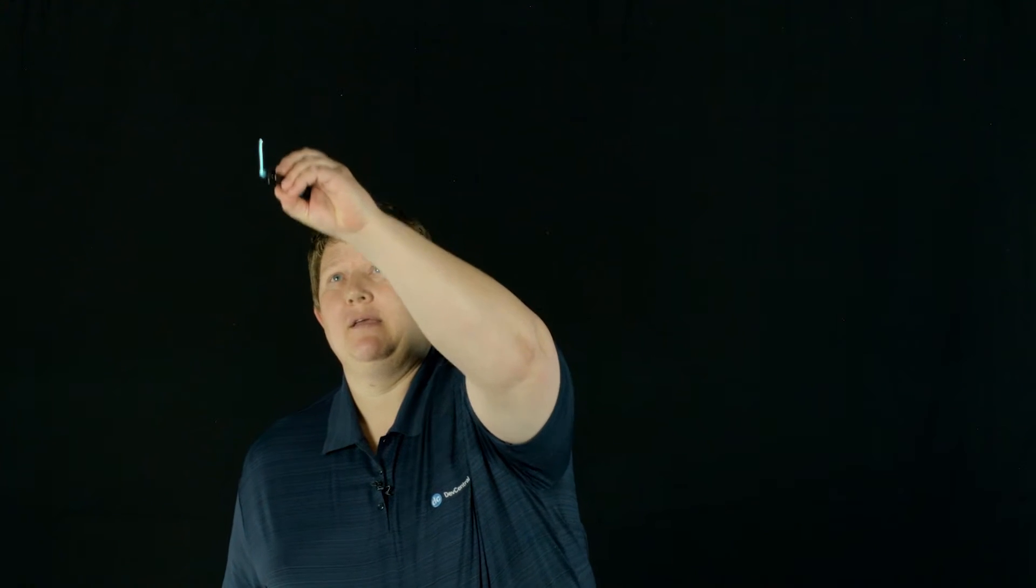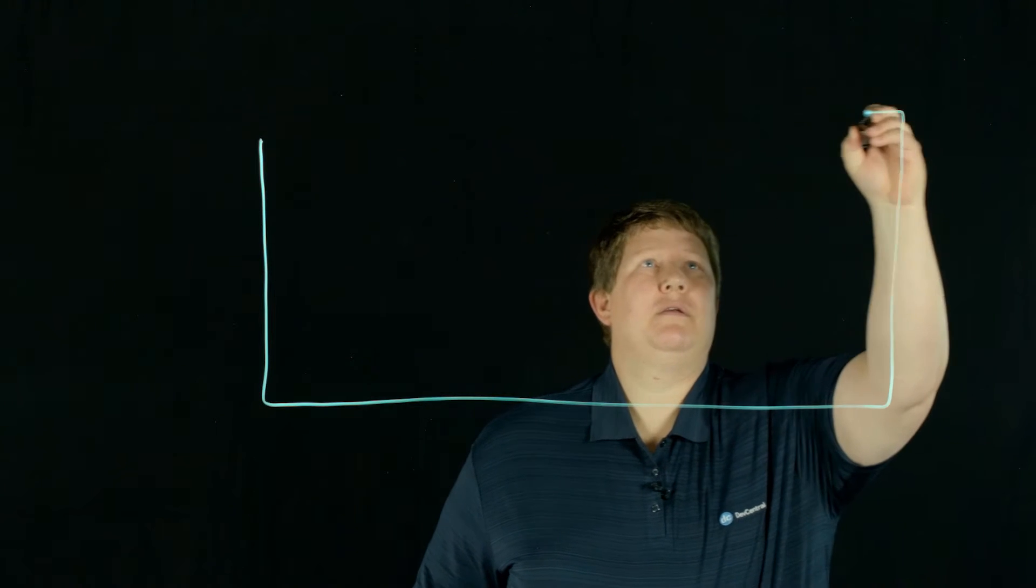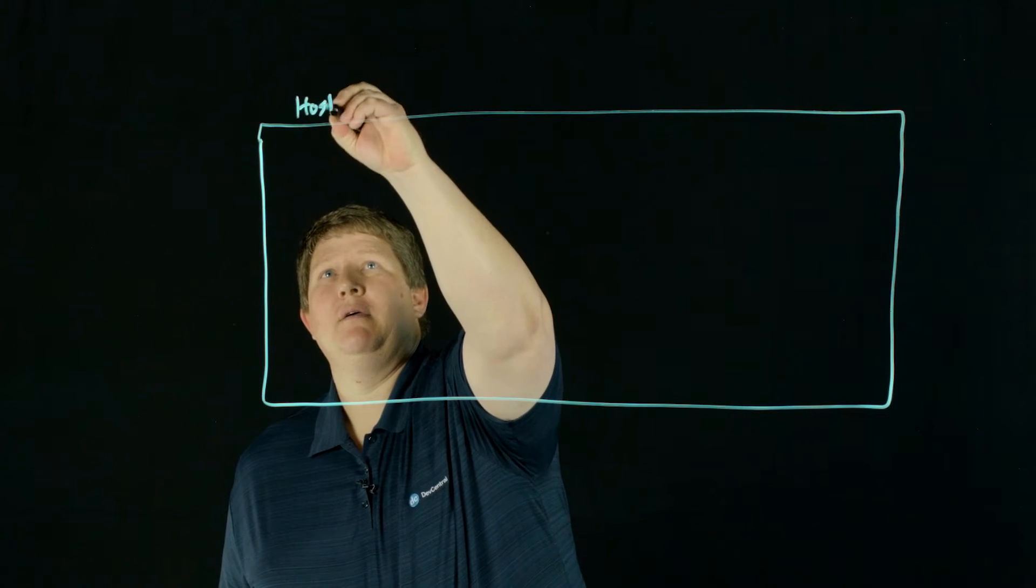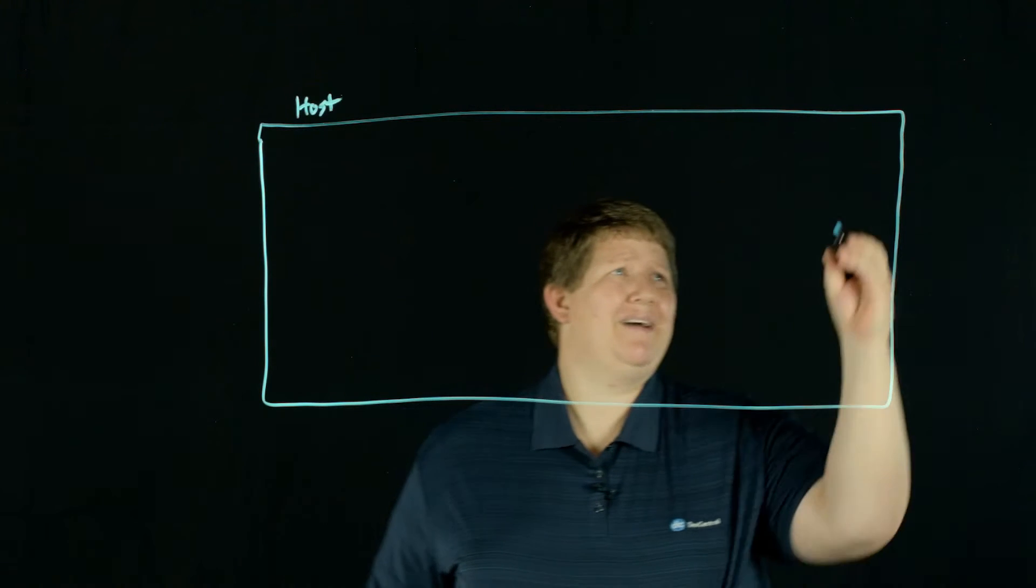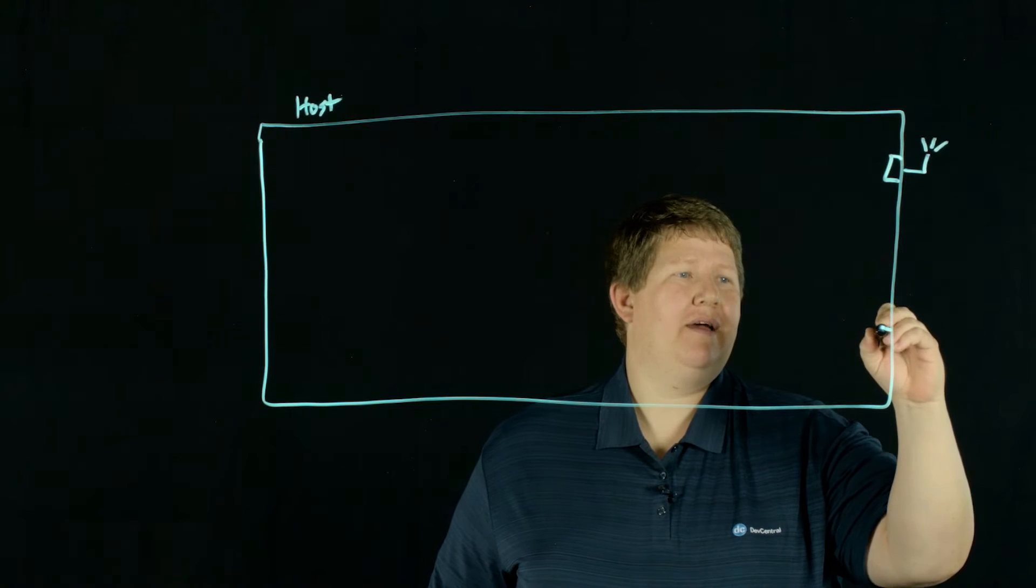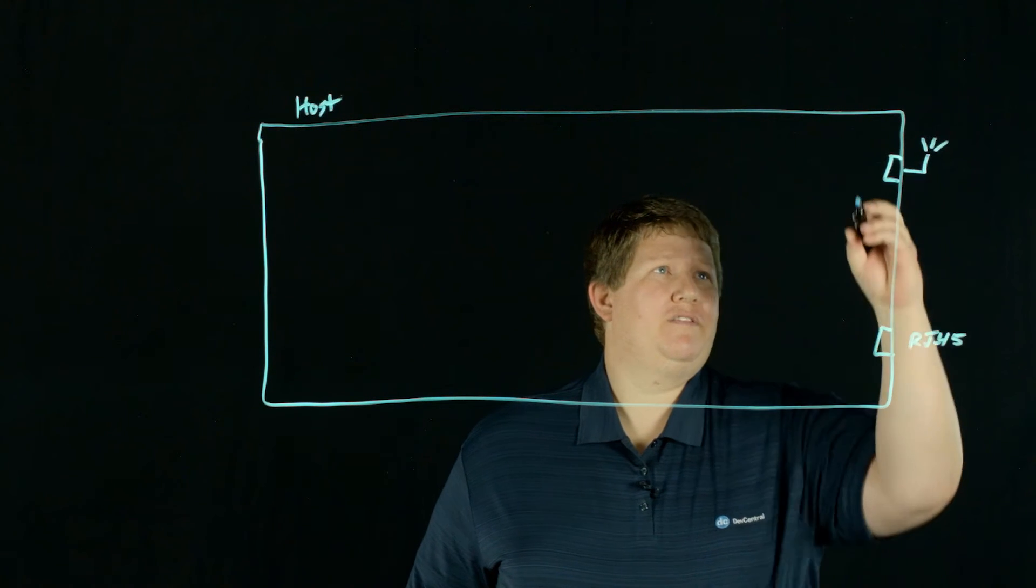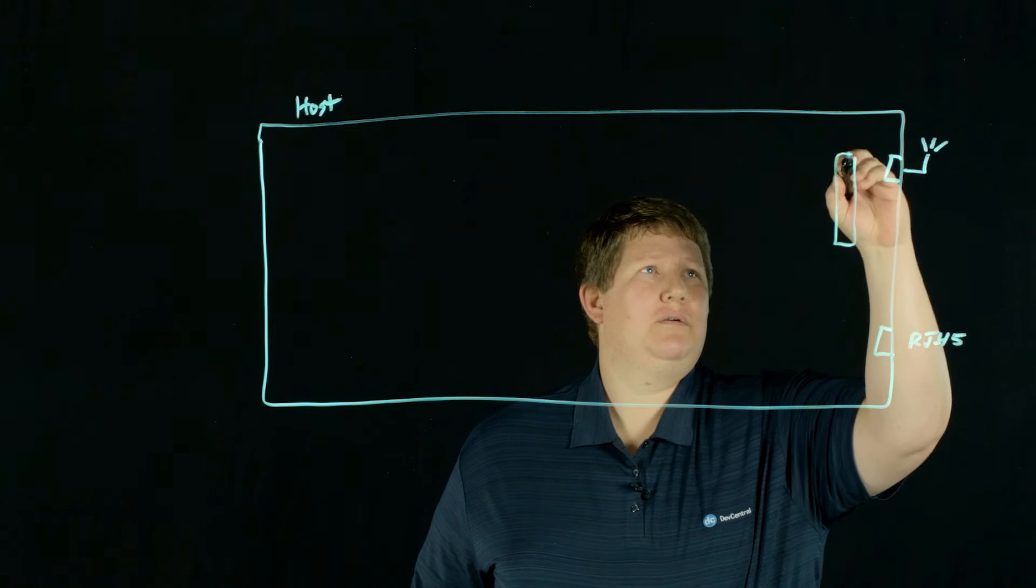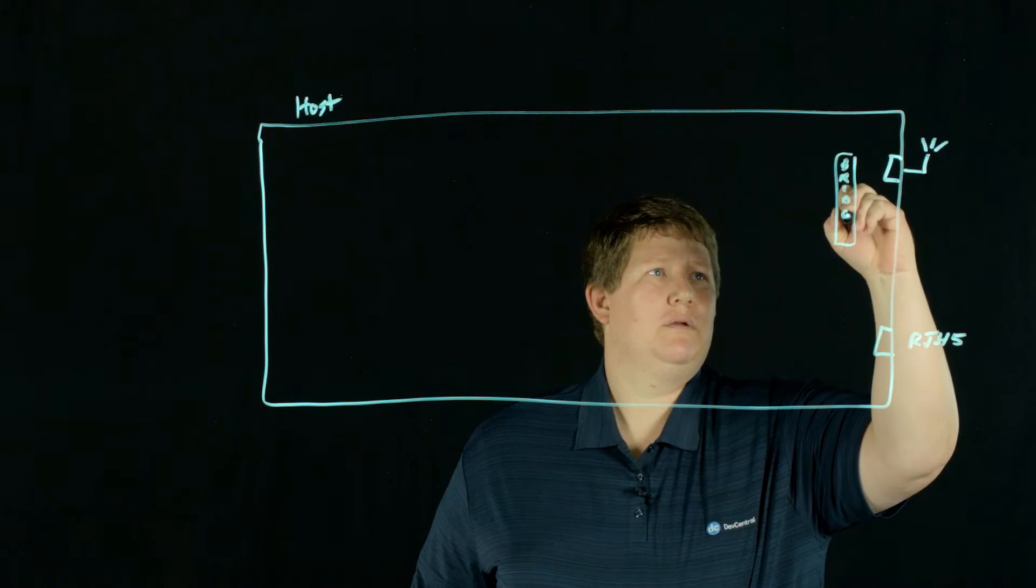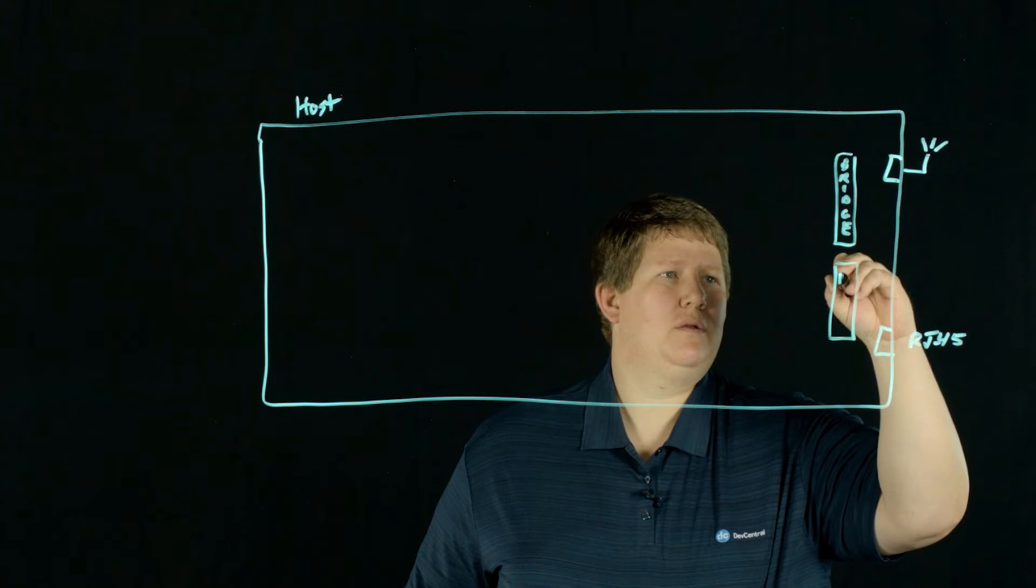If we kind of outline my entire system here, this is my host. I have a Wi-Fi NIC and I have my RJ45. I can connect to either a bridge or NAT.